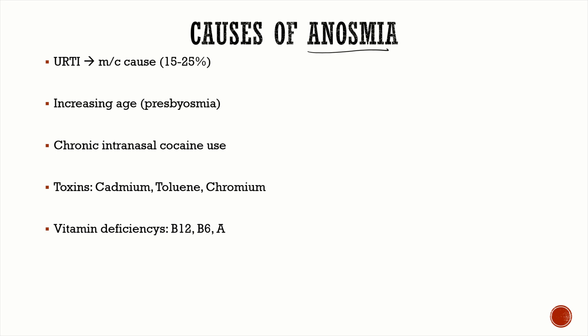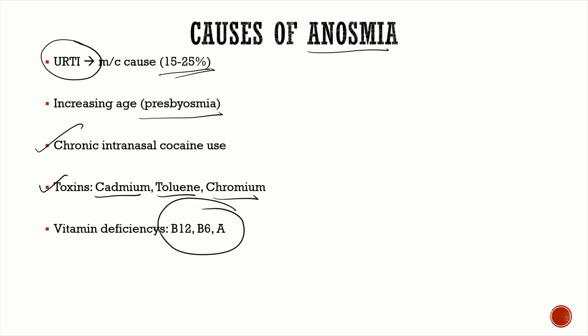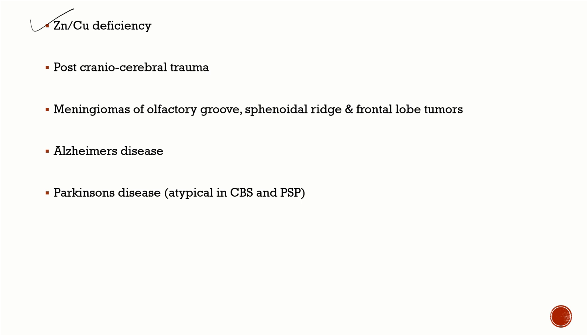Coming to the most important disorder — anosmia. When answering in viva, remember to give common causes first, then rarer ones. The most common cause is a simple common cold — any URTI, sinusitis — accounting for 15 to 25 percent of anosmia cases. Then presbyosmia due to aging, chronic intranasal cocaine use, and certain toxins like cadmium, toluene, and chromium.